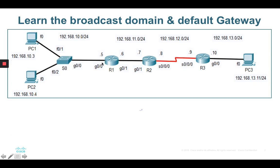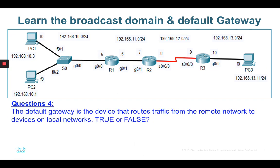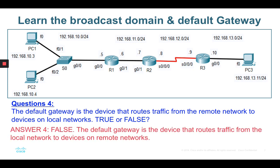Next question: the default gateway is a device that routes traffic from the remote network to devices on local networks — true or false? The answer is false, because the default gateway is a device that routes traffic from the local network to devices on remote networks.